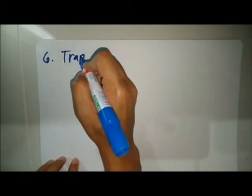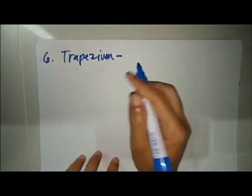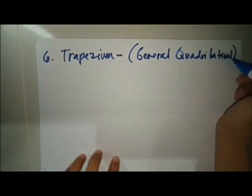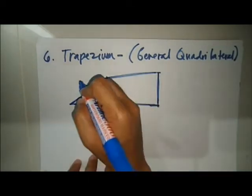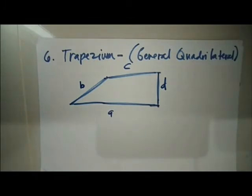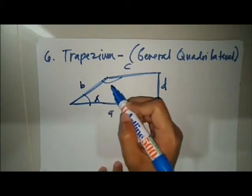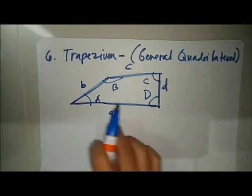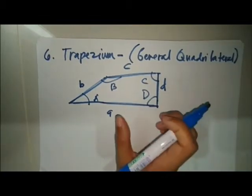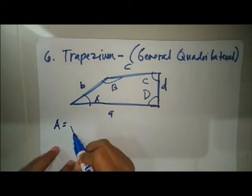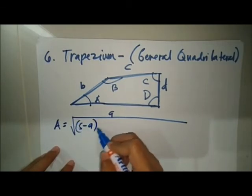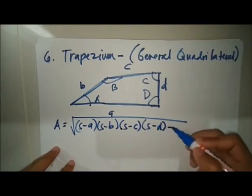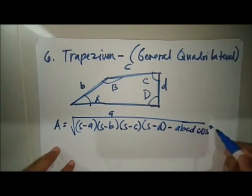The next shape is the general quadrilateral — a quadrilateral with four sides labeled A, B, C, and D, with opposite angles. The area of a general quadrilateral is given by the square root of (s minus a)(s minus b)(s minus c)(s minus d) minus abcd times cosine squared theta.